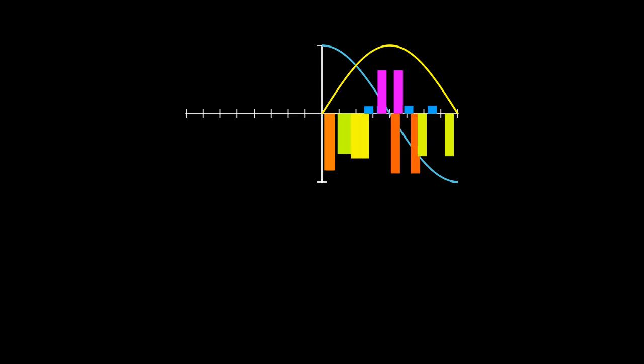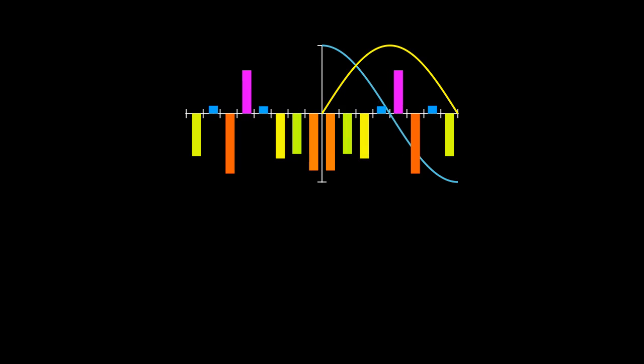Now we are going to reflect these data points around the y axis. We also have to extend all of our sine and cosine waves into the negative direction. Where a data point is multiplied by a positive sine value on one side of the y axis, the same data point is multiplied by the negative of that same sine value on the other side. This makes all the sine components cancel to zero. The reflection is the magical step that eliminates all of the sine components from the discrete cosine transform.